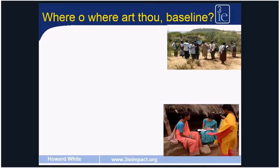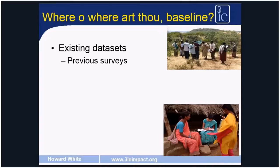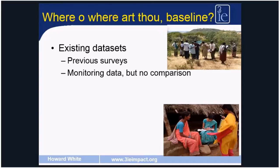There are a variety of means for trying to estimate a baseline when one doesn't exist ex post. One would be to use existing datasets — there may be previous surveys, school surveys, child health surveys, rural livelihood surveys — many surveys that may have sufficient sample size in your project area to act as a baseline. Quite a large number of studies have taken this approach of identifying and adopting previous surveys as a baseline. Alternatively, you might use monitoring data collected by the project from the outset, but the problem with monitoring data is they don't collect data in the comparison areas, so they're generally of limited use.